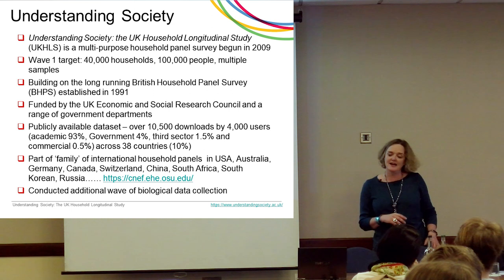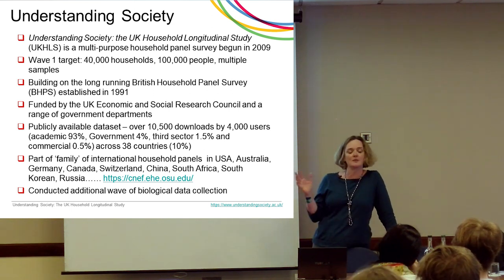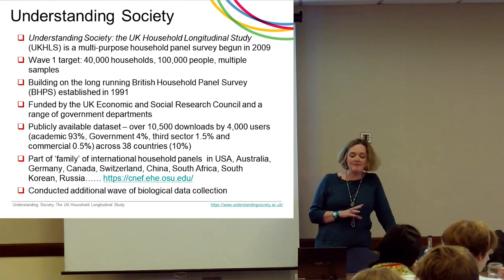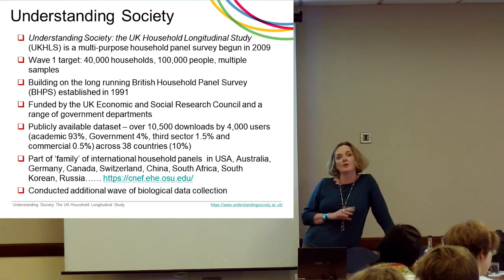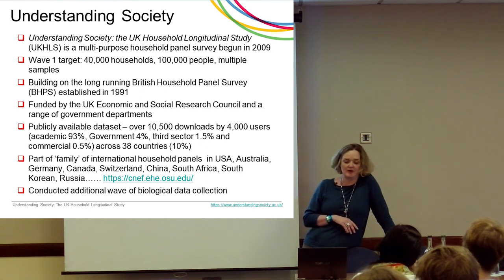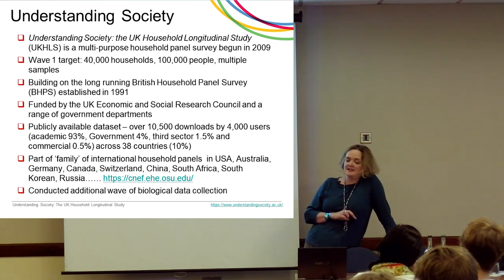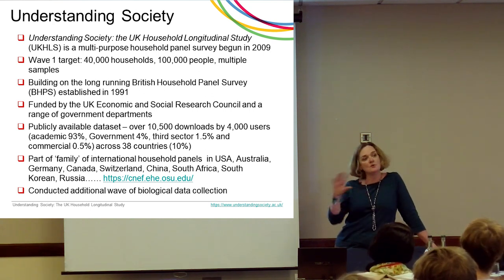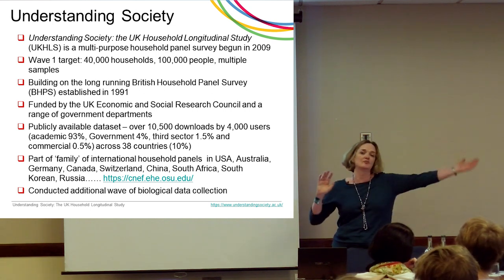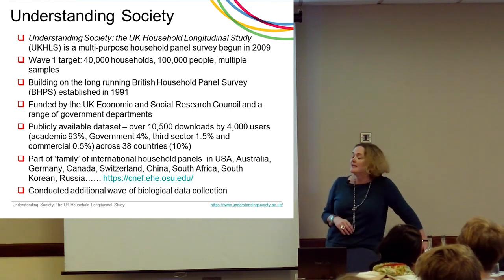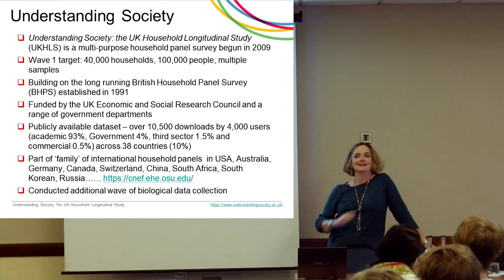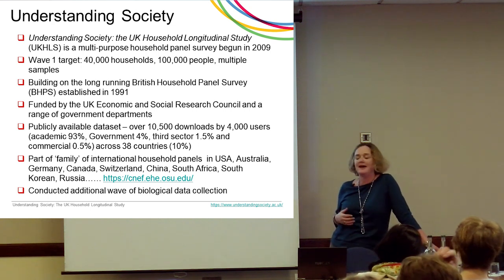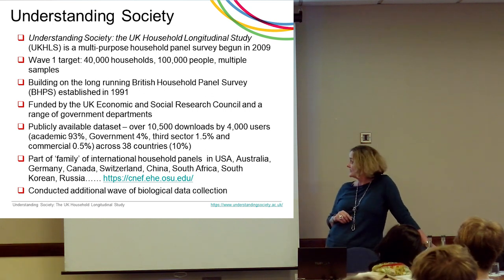Very briefly, Understanding Society is a household panel study. It's multi-purpose, covers a range of different domains, and began in 2009. We collect data annually from everybody in the household — at wave one the target was to interview everybody in 40,000 households, about a hundred thousand people. It builds on and incorporates BHPS, which was set up in 1991, and 8,000 households from BHPS were moved into Understanding Society at wave two, so for that group you've got data going back 25 years. It's funded by ESRC and government departments including DWP.